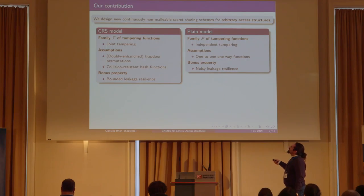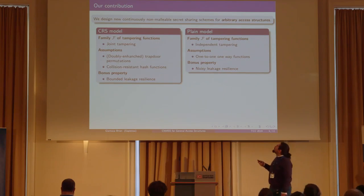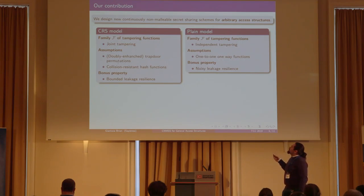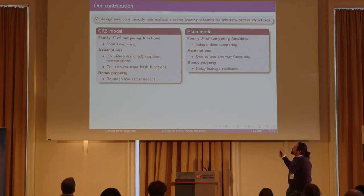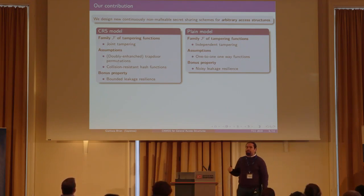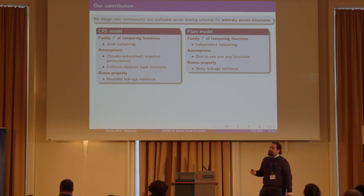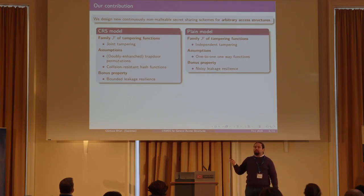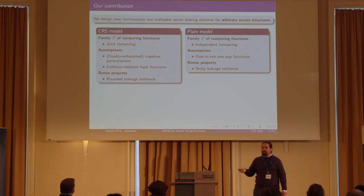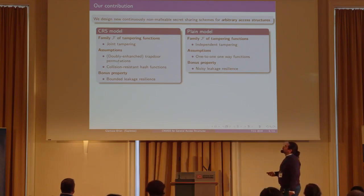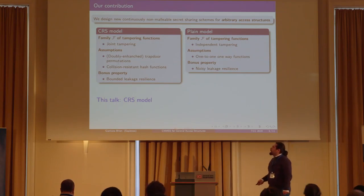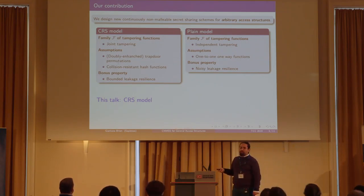In the plain model, we assume the existence of one-to-one one-way functions, and as a bonus we achieve noisy leakage resilience, where the scheme remains secure even if the attacker learns any information from the shares as long as the learned information does not reduce the min-entropy of the distribution of the shares by too much. However, in this talk, I will speak only about the CRS model, introducing also our new security notion.